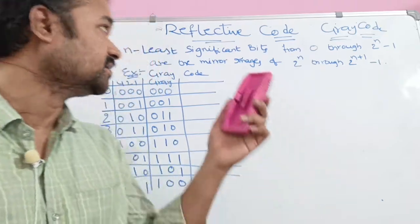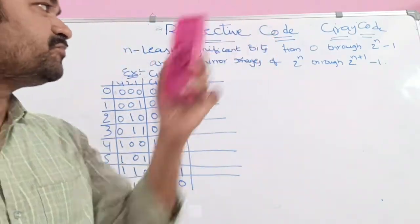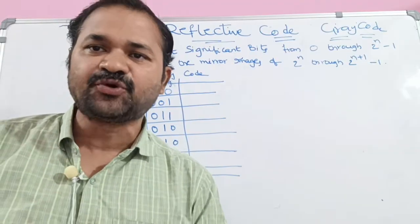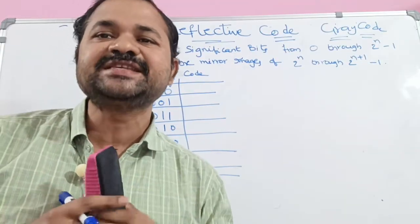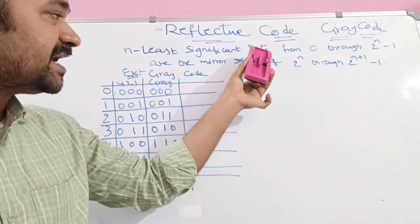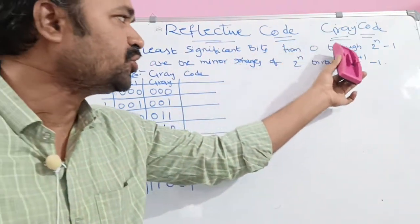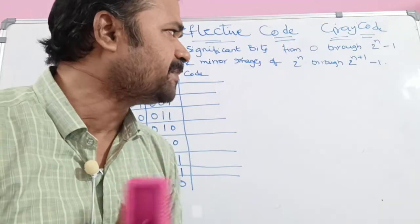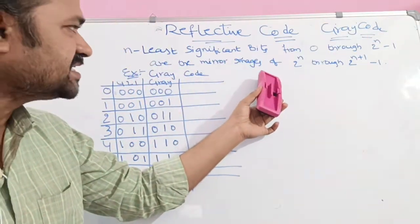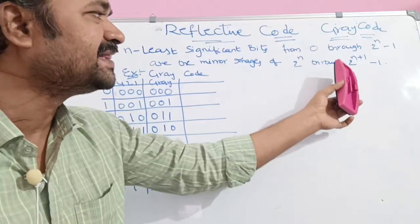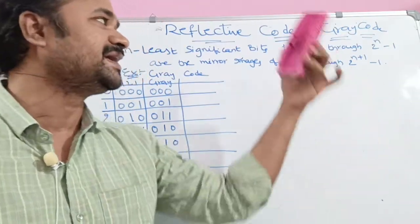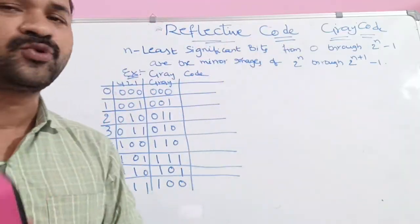Let us discuss about reflective code. Gray code is called a reflective code. First, let's see what a reflective code is. The n least significant bits from 0 through 2^n minus 1 are the mirror images of 2^n through 2^(n+1) minus 1. So why is Gray code called a reflective code?